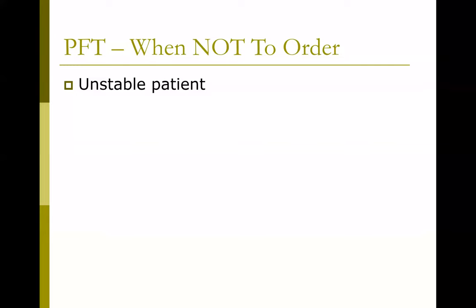These are usually patients with neuromuscular disease, such as myasthenia gravis or Guillain-Barré syndrome, where we may want to look at the person's NIF — negative inspiratory force — or their FVC — forced vital capacity — to see respiratory muscle function and strength. Outside of those scenarios, ICU patients typically don't require PFTs, and they're simply not very useful.